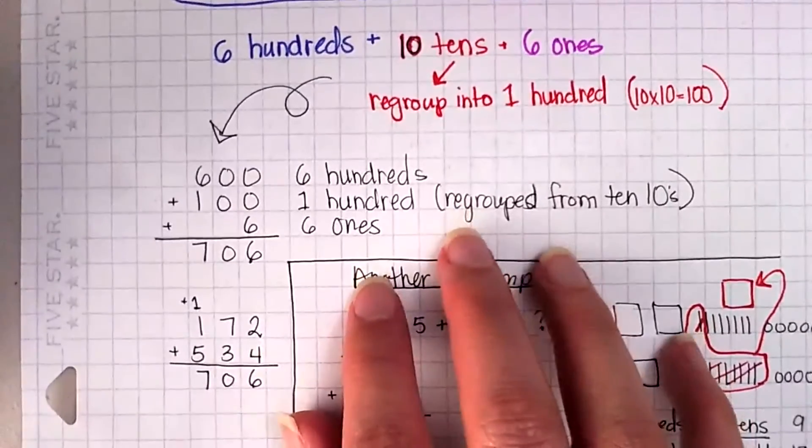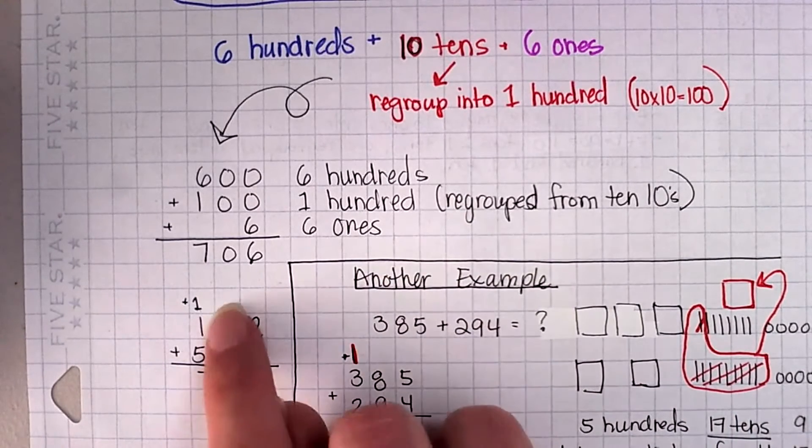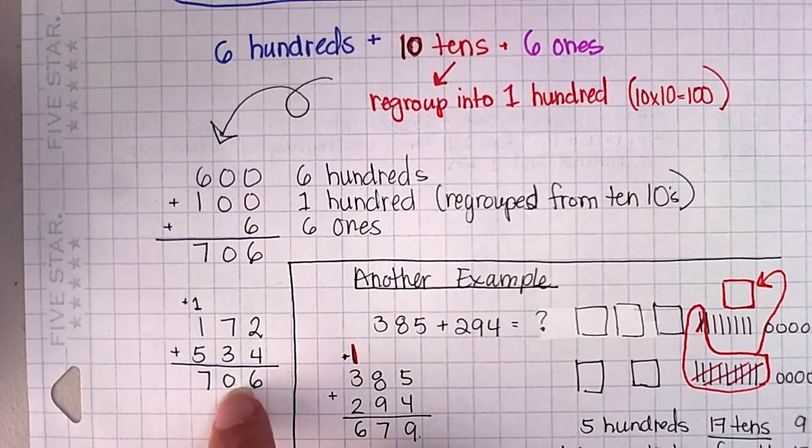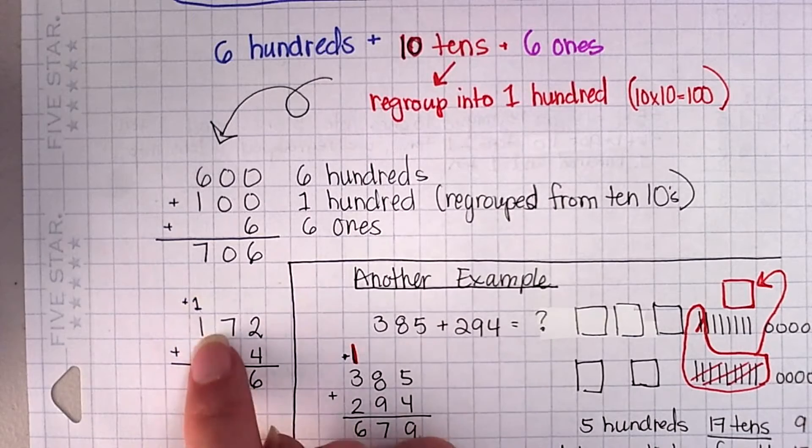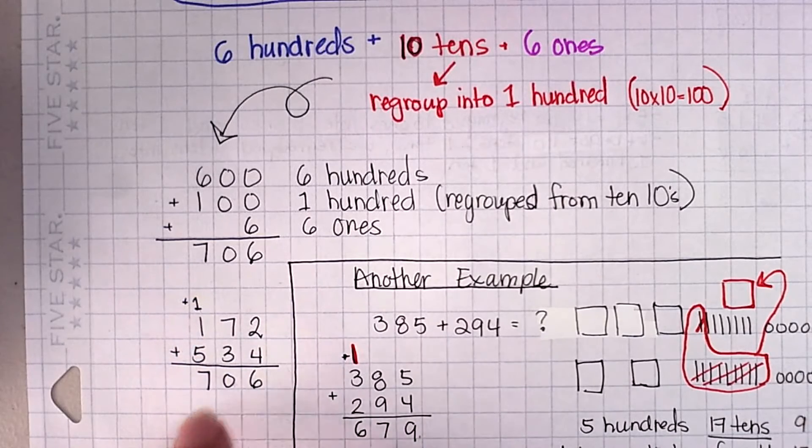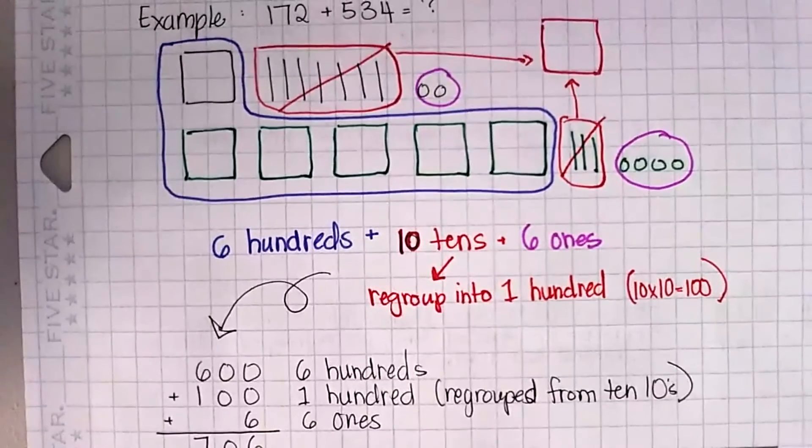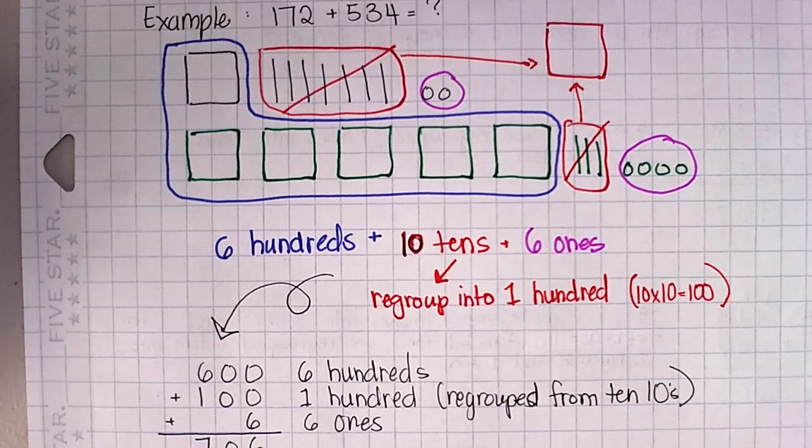So if I were to stack and add and use regrouping and carrying over, 2 plus 4 is 6, 7 plus 3 is 10. So I put my 0 from my 10 over here. And the 1 I carry over here, 1 plus 5, 1 plus 1 is 2 plus 5 is 7, which gave me 706. So regrouping is basically just switching out your pieces for the next group up. So 10 of your 10s, you can switch those for a group of 100. 10 of your 1s, you can switch them for one of your 10 rods.